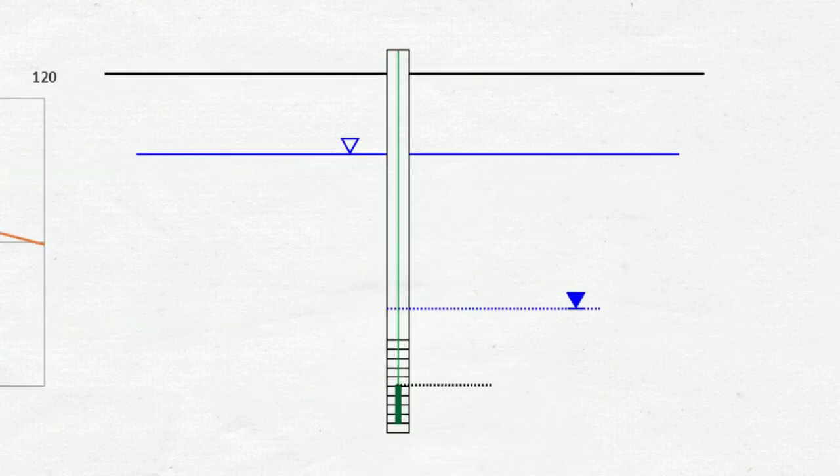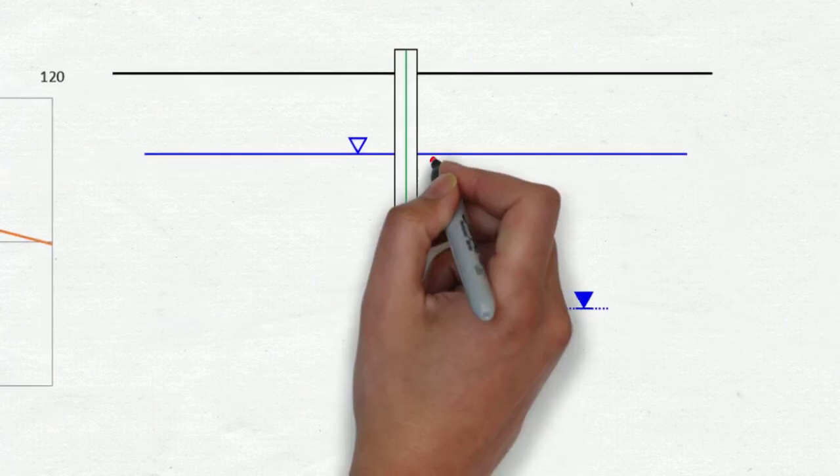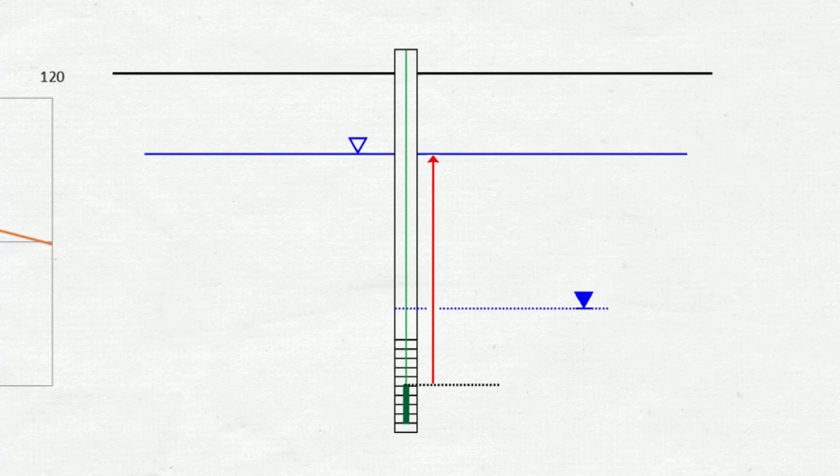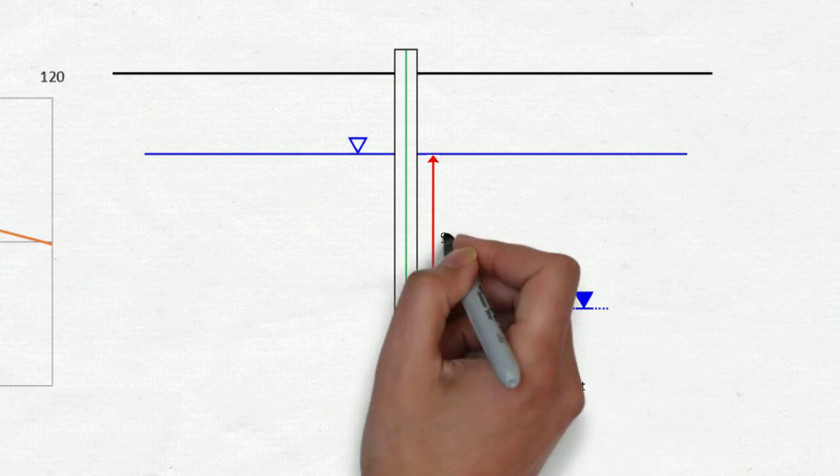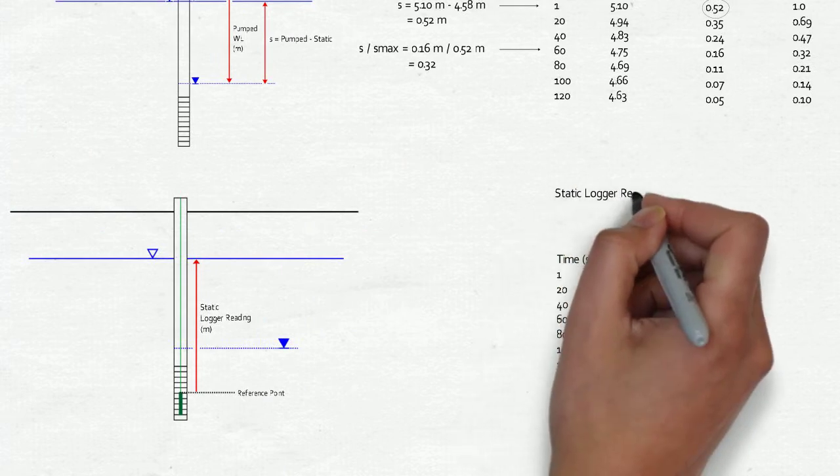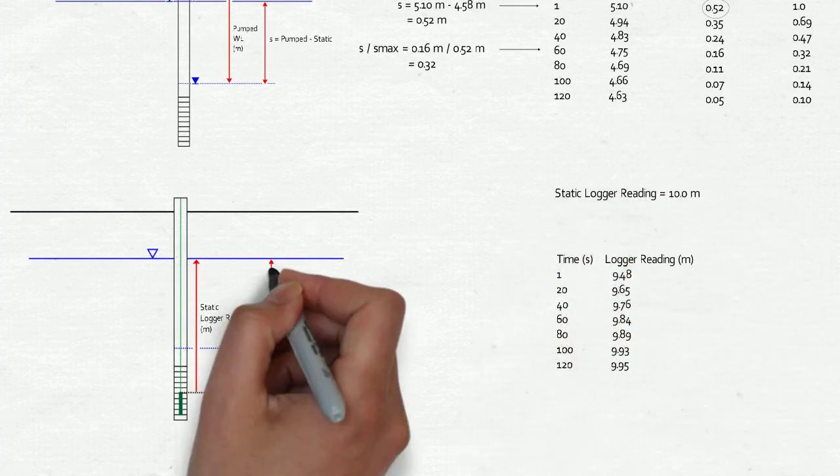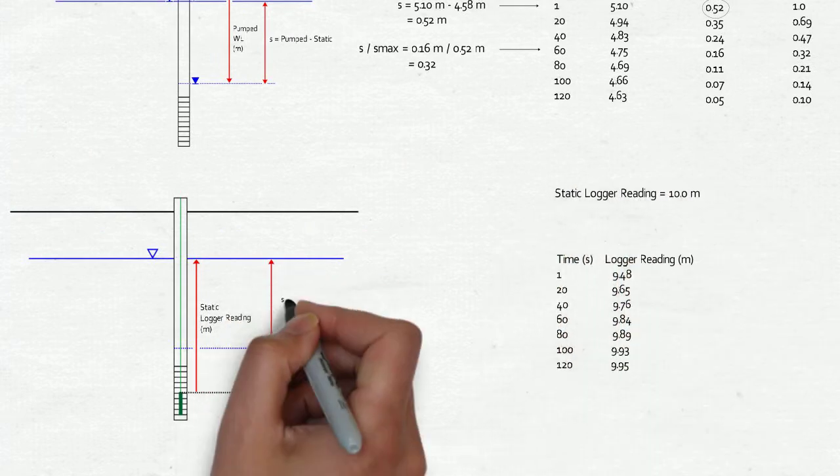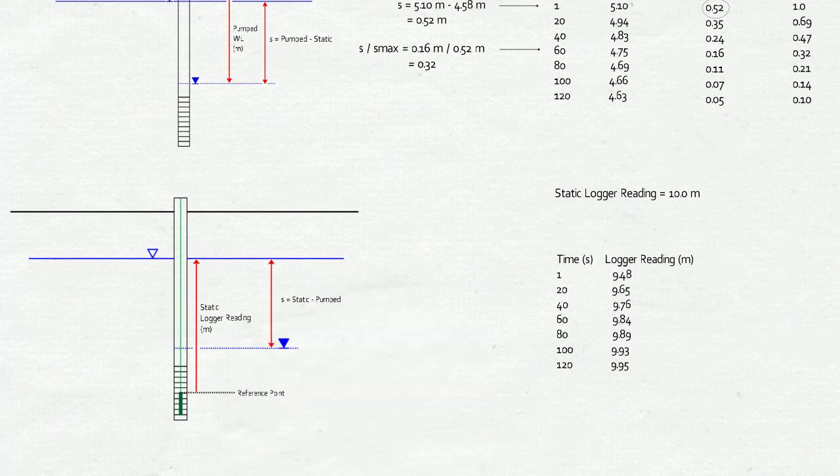The initial table of data will include time and data logger levels. The data logger measures the height of the water column over top of the logger. The reference point in this example is the top of the data logger. The static water level was determined from the logger data after it was placed in the well, but before any pumping. Drawdown is still just the difference between the static water level and the level in the well after pumping or baling.